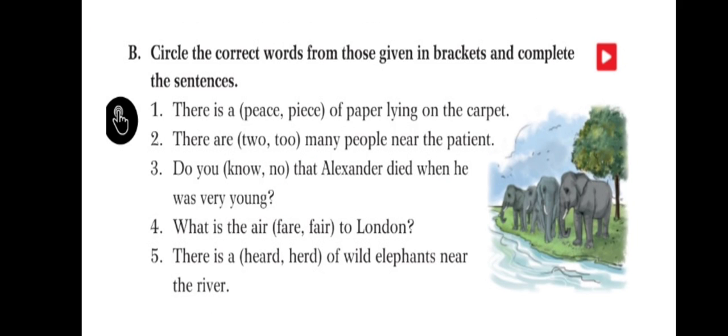Now, next, B. Circle the correct words from those given in brackets and complete the sentences. There is a dash of paper lying on the carpet. Here you can see peace. The next word is also peace. The pronunciation is same, peace, peace. But the spelling is different. So, children, do you remember that this topic we already discussed in our earlier lessons? What do we call this type of words having the same pronunciation, different spellings, and different meanings? That comes under homophones. Homophones, because they are having same sound, but different spellings and different meanings.